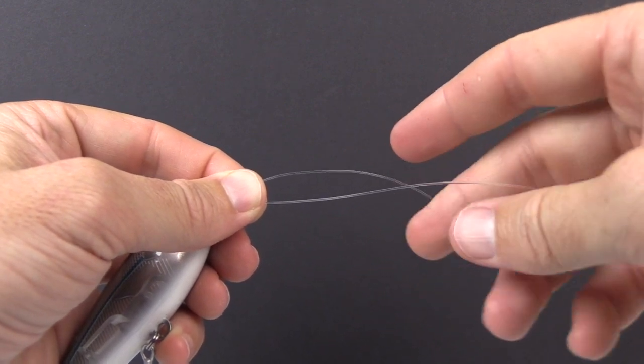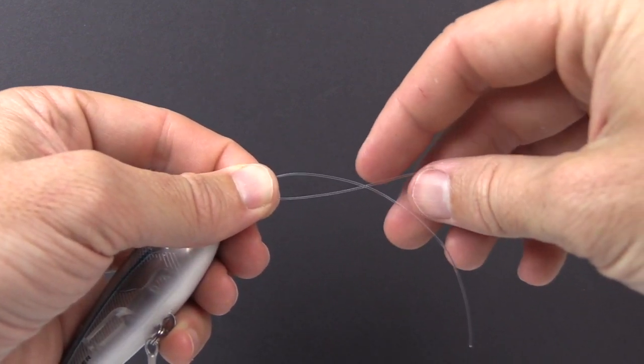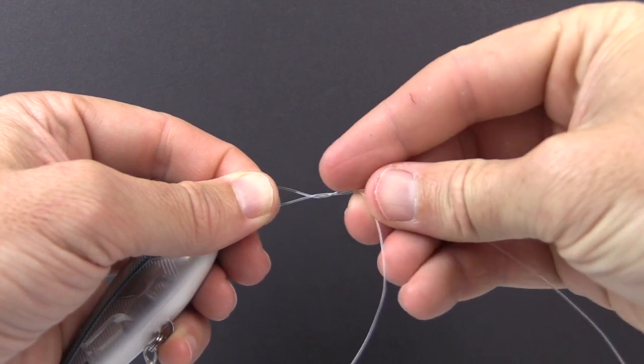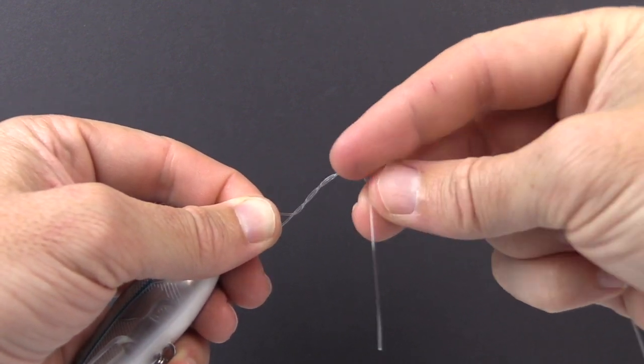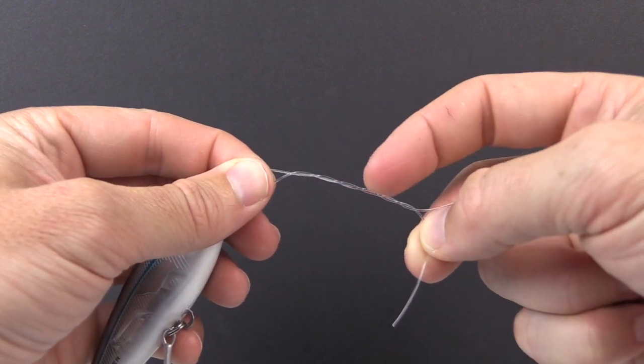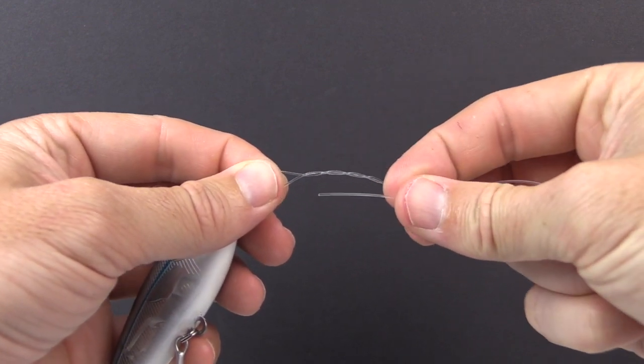And so now with this tag end we just have the main line and the tag end sticking out. Tag end just go around, just basic wraps around the main line five times. And so you can see all these wraps they're all going the same direction, super basic.